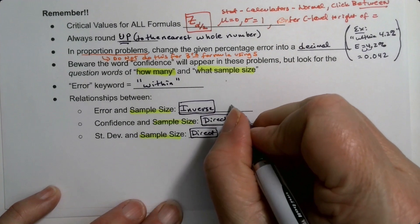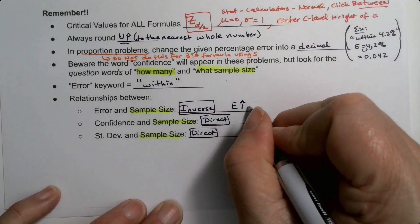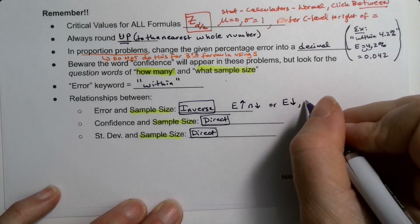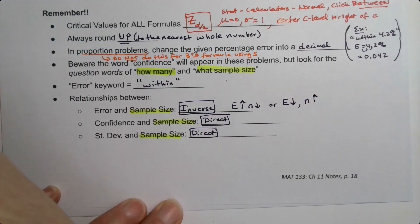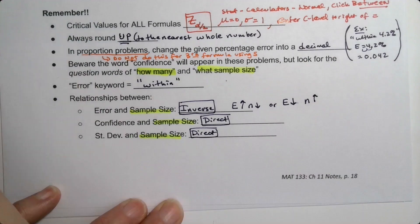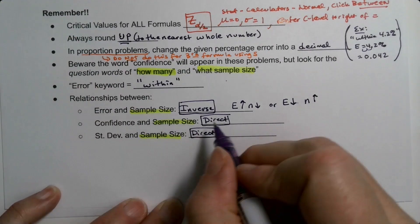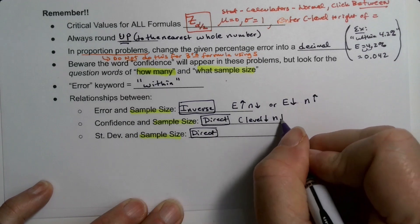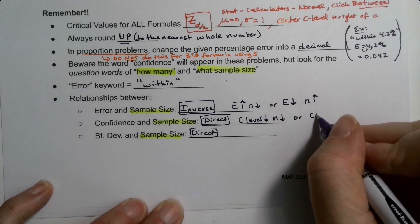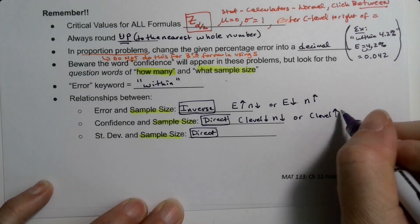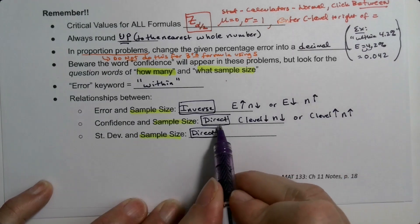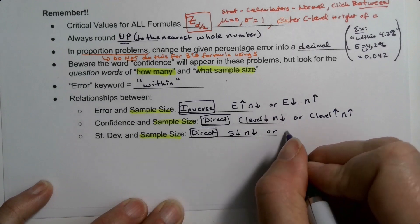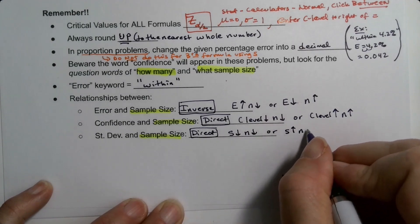So if error goes up, sample size goes down. Or if error goes down, sample size goes up. I don't know why I put an extra comma there. C-level has a direct relationship. So if the C-level goes down, the sample size goes down. Or if C-level goes up, sample size goes up. That's a direct relationship. And then if S goes down, N goes down. Or if S goes up, N goes up.